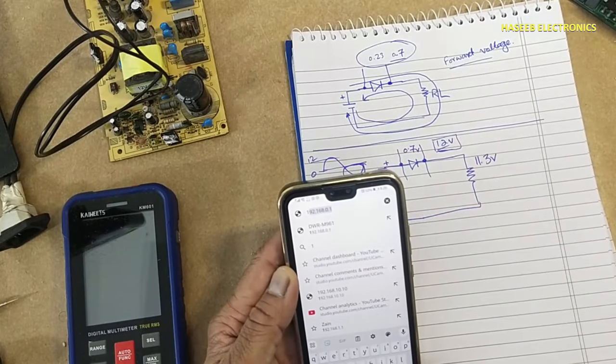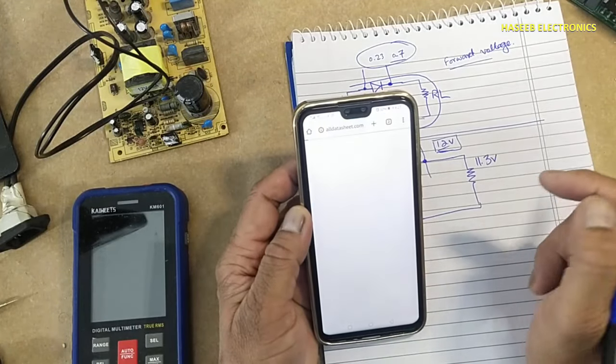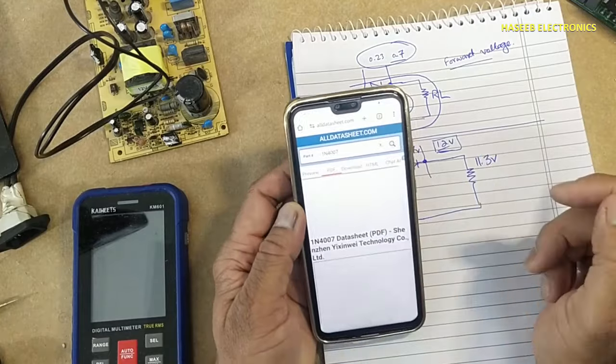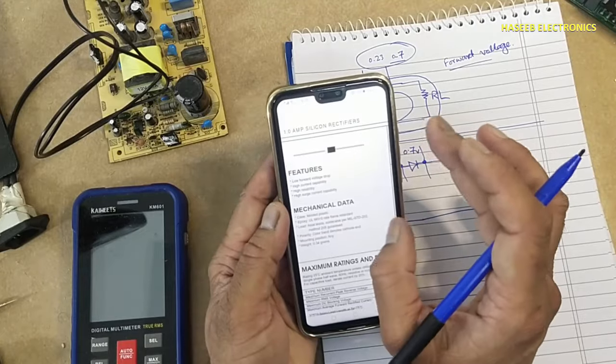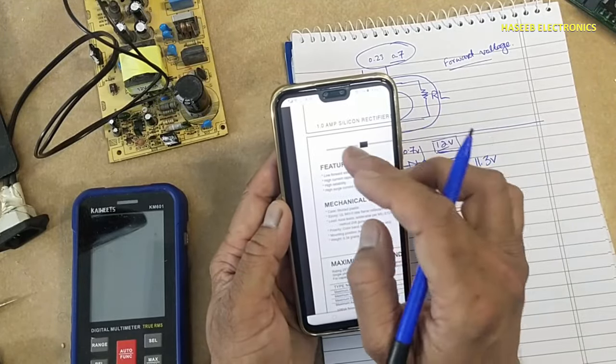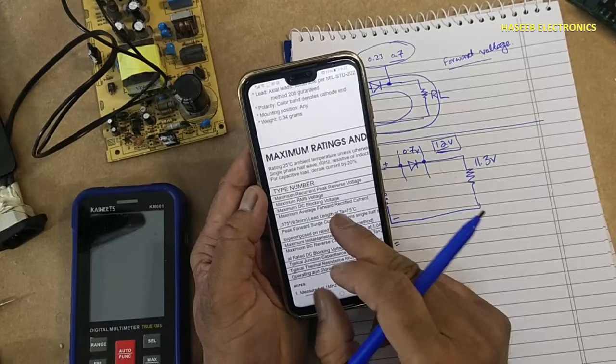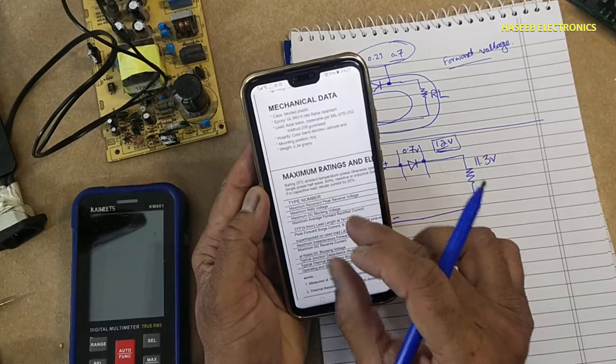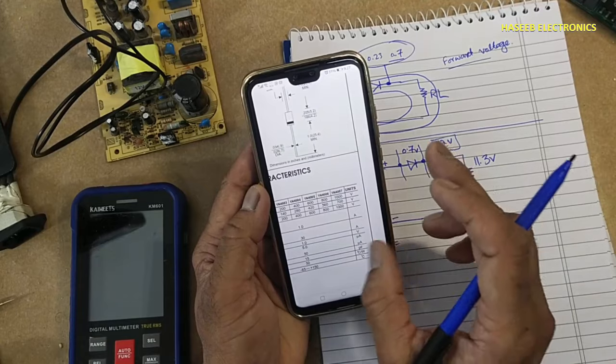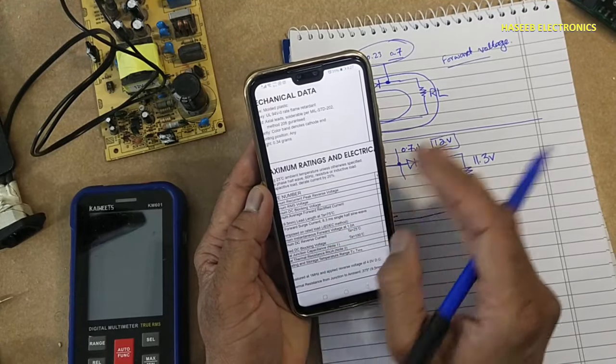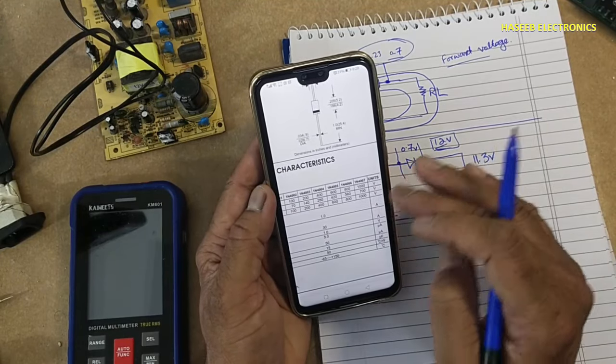Let's check datasheet for this one, 1N4007 diode. 1N4007, it is 1 ampere diode, that is forward current. If you see here maximum recurrent peak reverse voltage, these are peak reverse voltage that are 1000 volts. This voltage value is destructive value. At this level, 1000 volts, 1N4007 will damage.